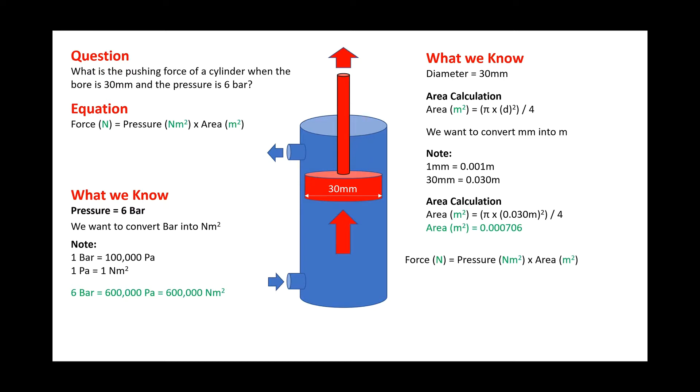So we now have both our pressure in the correct units and our area in meters squared. If we punch that back into the equation, it will give us a force in newtons. Now this newton force, it's always good to equate back into a weight because this gives you a good idea of the kilogram force the cylinder can actually push. So if we take the force of 423 newtons and divide it by 9.8, which is gravity, it gives you 43 kilograms.